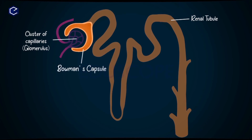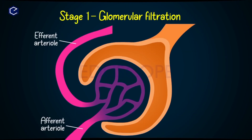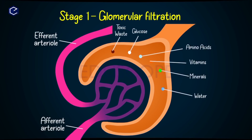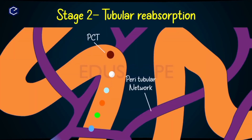Each nephron has a tuft of capillaries called the glomerulus and a cup-like structure called Bowman's capsule. Nephrons filter the blood and remove waste products like urea, uric acid, and creatinine. Useful materials like glucose, amino acids, and salts also get filtered in the Bowman's capsule.